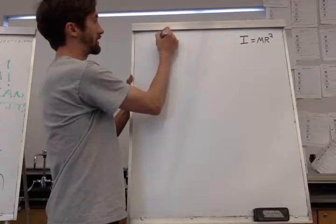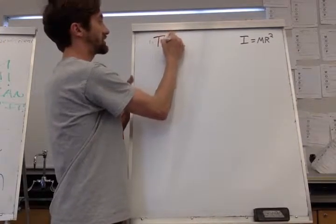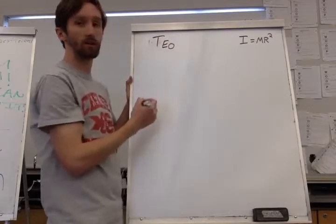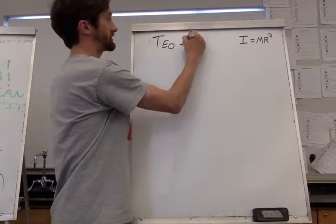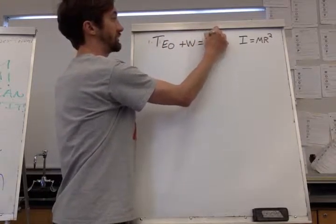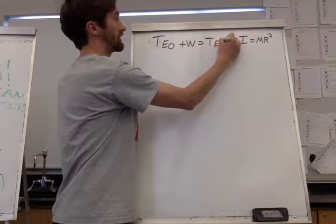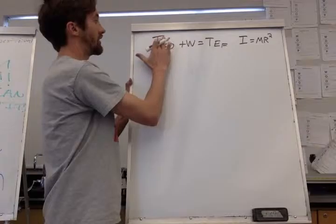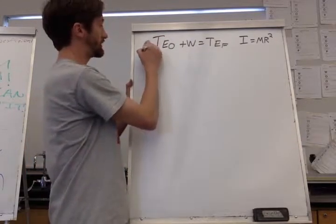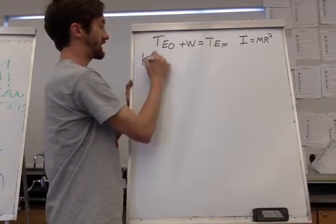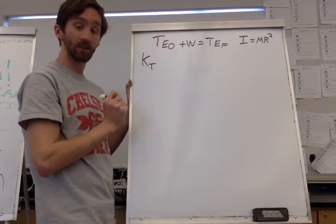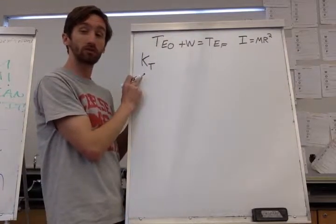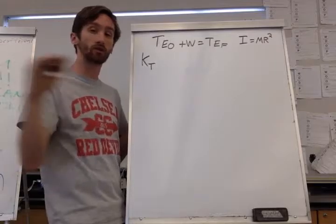Our total energy at the beginning plus our work is equal to the total energy at the end. And here our total energy at the beginning is some kinetic energy translational. This is what we're used to. Translational means going in a straight line.